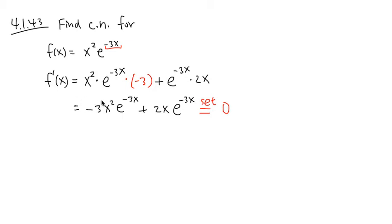To solve for 0 in this case, notice that they both have e to the negative 3x as a factor. So I can factor this out, e to the negative 3x. On the first part, I have negative 3x squared plus 2x, like that. And I will make this equal to 0.